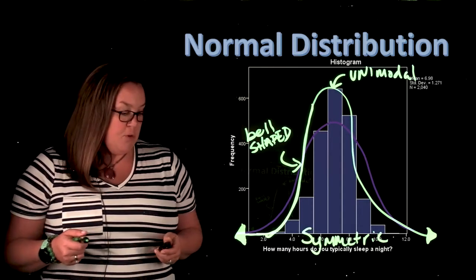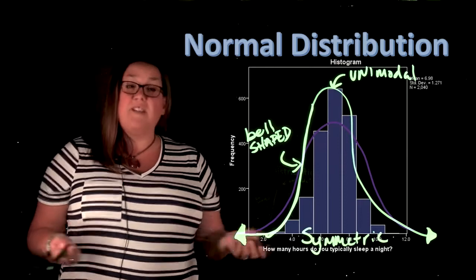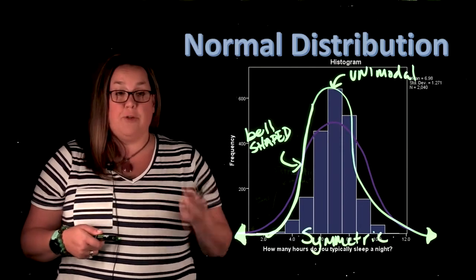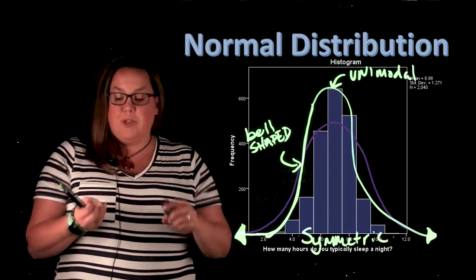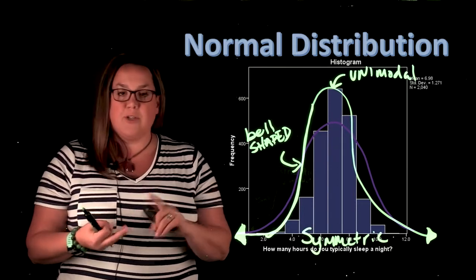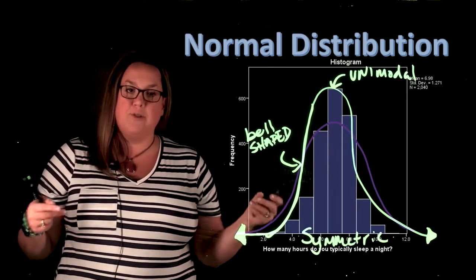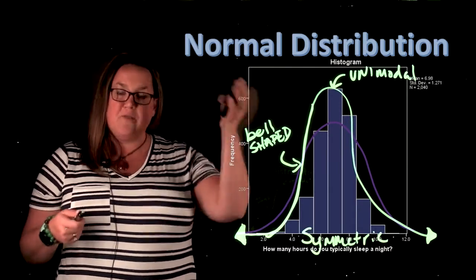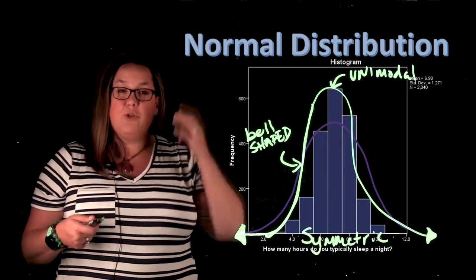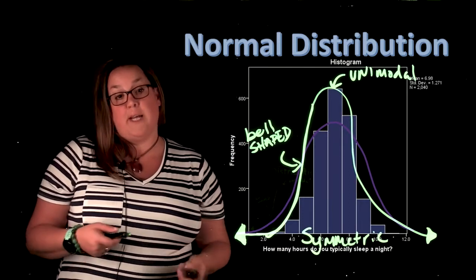So in future videos, we'll be talking about some of the aspects of the normal distribution. So if something does follow the normal distribution, which things like IQ, height, head circumference, all of those follow the normal distribution. What does that mean? What can you do with that? So if data does follow that particular type of distribution, how can you utilize that information?